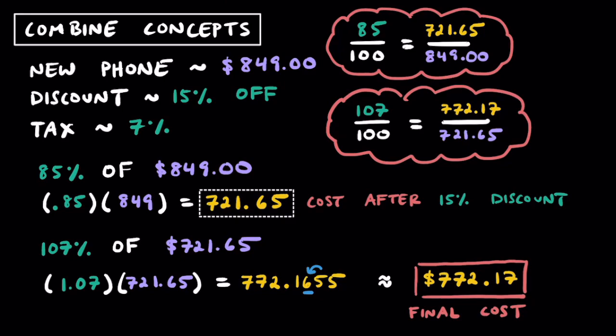Hopefully you found this video helpful in understanding how to apply percentages to consumer math — when you're out shopping, buying things, or going out to eat. I encourage you to look at receipts when you go out to eat or shopping, and take a look at the coupons or discounts you might be receiving — you might recognize percentages and numbers that now make sense to you. As you get older, it's increasingly important to understand how to budget and manage your money to plan for the future. If you found this video helpful, please give it a thumbs up, let me know in the comments, and consider subscribing. Keep up the great work and I'll see you in the next one.